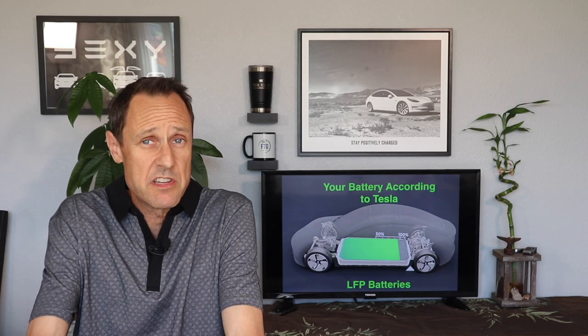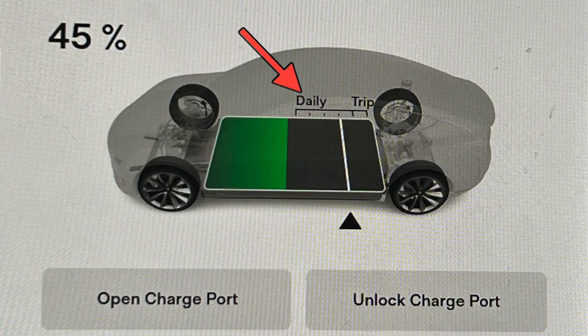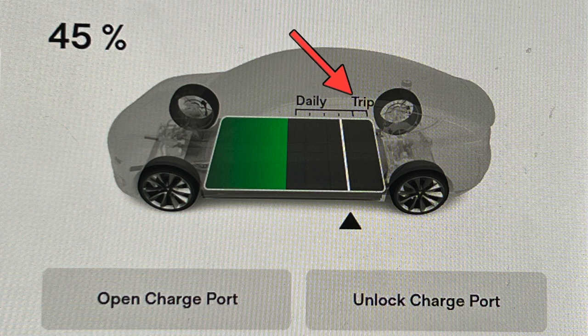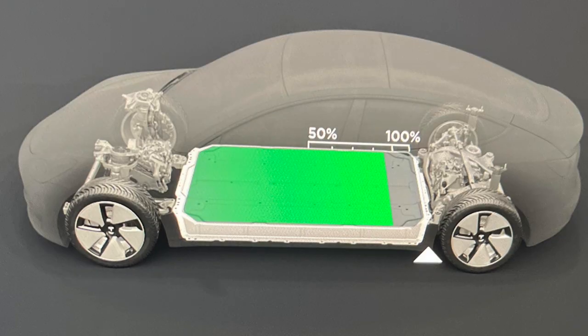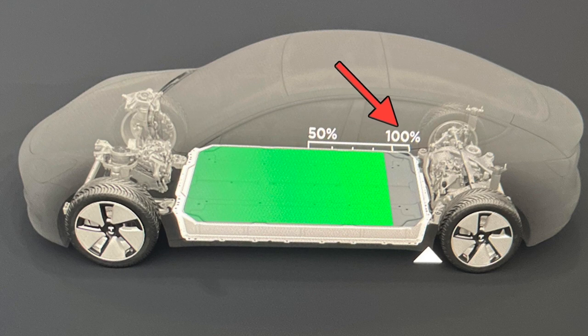So, the question is, if you recently purchased a new Tesla, how do you know which kind of battery you have? Well, it's actually quite simple. Go into your car and upon setting the charge limit, if you see daily and trip labeled on the battery, then you have the original lithium ion battery. If you see 50 percent and 100 percent without daily and trip, then you have the LFP battery.